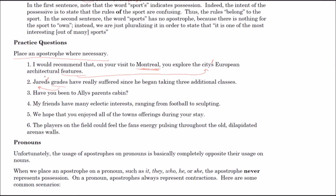Number three: 'Have you been to Ali's parents' cabin?' We actually have two possessions here. The more obvious one is that the cabin belongs to the parents — since we'd say 'parents' plural rather than a single parent, the apostrophe goes after the S. But also the parents belong to Ali, who is singular, so Ali's apostrophe goes before the S.